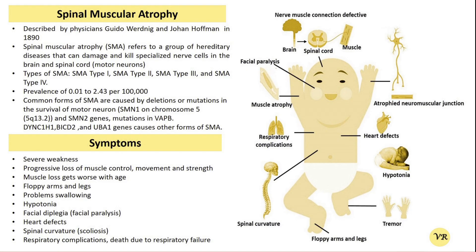The severity and onset of symptoms can vary depending on the type of SMA, but common symptoms include muscle weakness, hypotonia, fasciculations, joint contractures, cardiac issues, difficulty in breathing, and difficulty in swallowing. Muscle weakness is the hallmark of SMA, affecting the voluntary muscles used for activities like walking, swallowing, and breathing. Weakness may begin in the legs, arms, or torso.